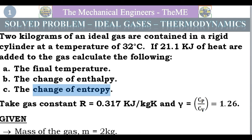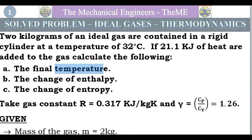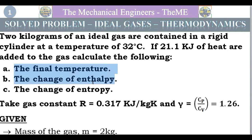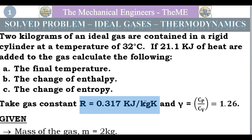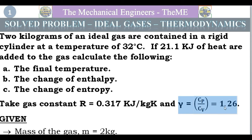By adding 21.1 kilojoules of heat to the gas, the temperature of the gas will increase, the enthalpy of the gas will get changed, and the entropy of the gas will get changed. The gas constant value is 0.317 kilojoules per kg·K and the adiabatic constant is 1.26.